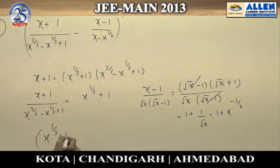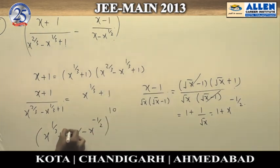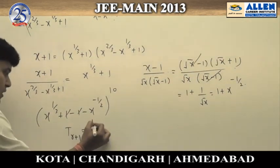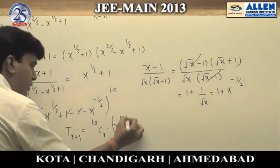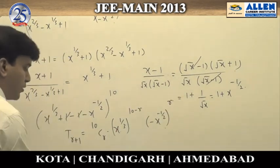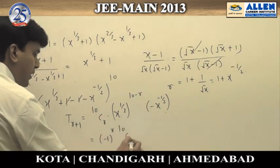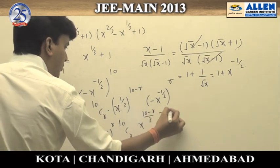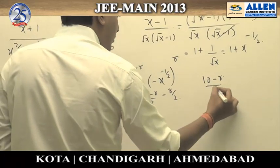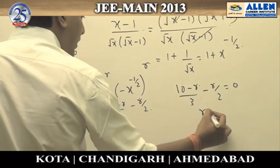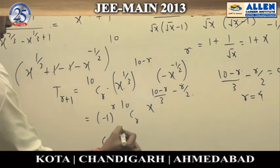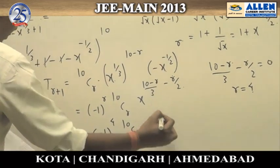Substituting, the expression becomes (X^(1/3) + 1 − 1 − X^(−1/2))^10, which reduces to (X^(1/3) − X^(−1/2))^10. The general term is (−1)^R × 10CR × X^((10−R)/3 − R/2). For the term independent of X, we set the exponent of X to zero: (10−R)/3 − R/2 = 0, giving R = 4. Substituting R = 4, the term is (−1)^4 × 10C4 = 210. The correct answer is option 3.